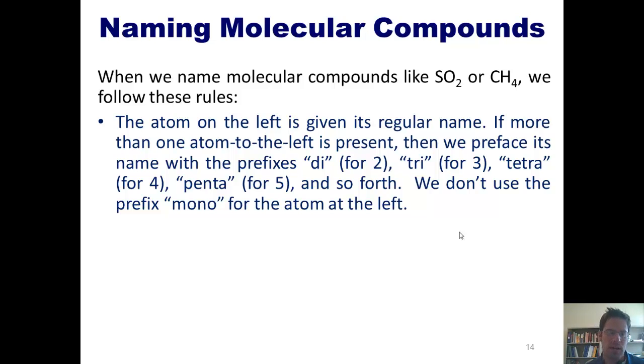The atom on the left is given its regular name. If more than one atom to the left is present, then we preface its name with the prefixes di for 2, tri for 3, tetra for 4, penta for 5, hexa for 6, and so forth. We don't use the prefix mono for the atom at the left.